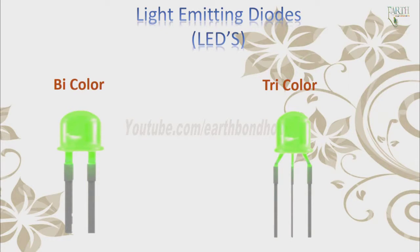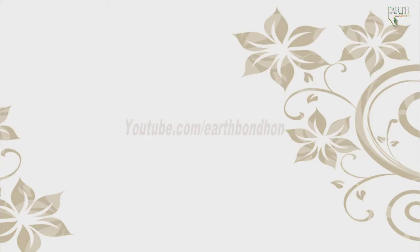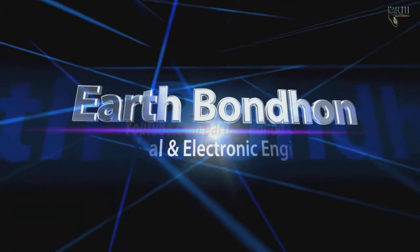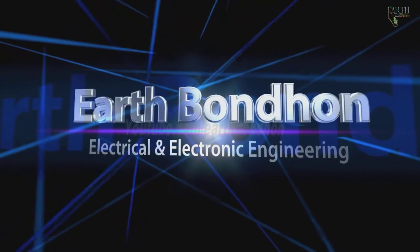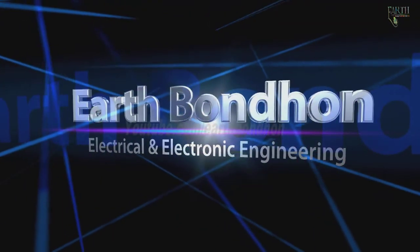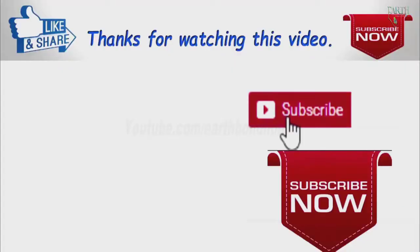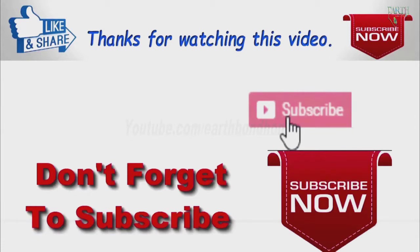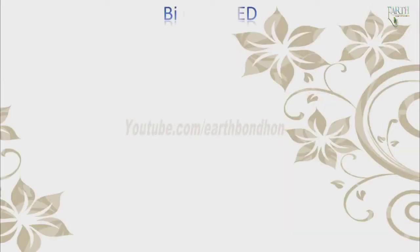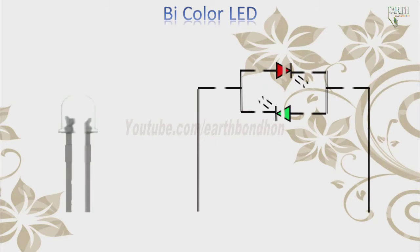The terminal that is made positive determines the LED that lights. If a positive voltage is supplied to the green anode, then the green lights. If positive voltage is supplied to the red anode, then the red LED lights. With the two-terminal system, only one LED can light at a time.